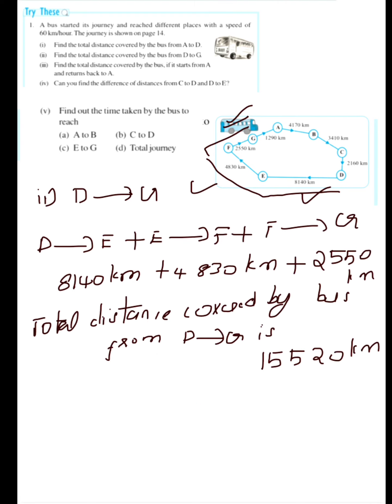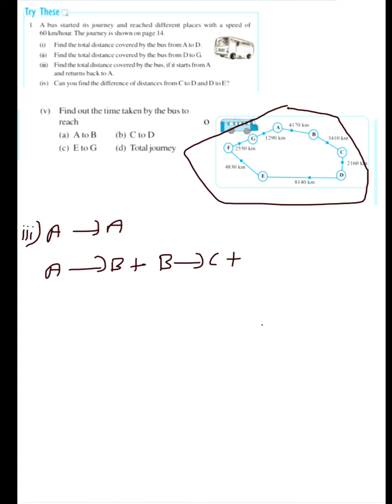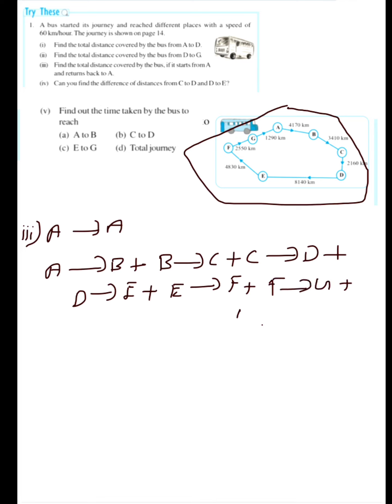Now let's see the third question: find the total distance covered by the bus if it starts from A and returns back to A. That means it goes all the way and returns, so A to A. The total distance is A to B, plus B to C, plus C to D, plus D to E, plus E to F, plus F to G, plus G to A.